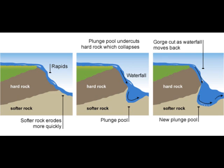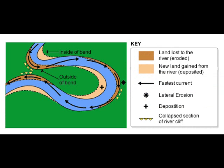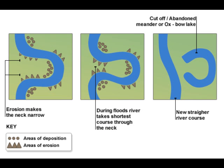A meander is formed when a river bends around an obstacle. The bend develops and the meander grows wider by lateral erosion and deposition. Lateral erosion forms a river cliff on the meander and deposition can form a slip-off slope. Meanders can get larger over time, meaning they can eventually turn into an oxbow lake.